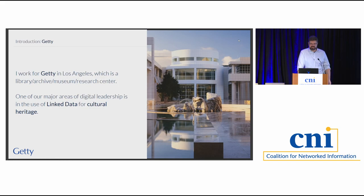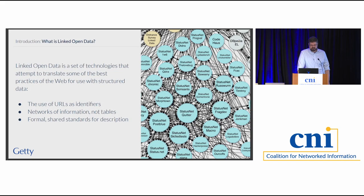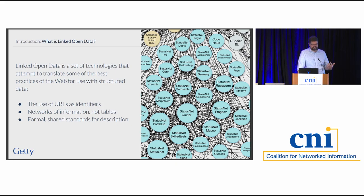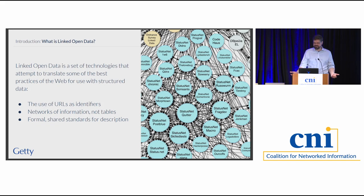If you don't know what linked open data is, this is probably not the best introduction to it, but in a very short summary: it's a bunch of technologies that came out of the desire to say the web did a bunch of things really well — what would it mean to do those same sorts of things for structured data? What would it mean to use URLs or URIs as identifiers for things, the way we use identifiers for web pages? What would it mean to have networks of connected information rather than just a table?